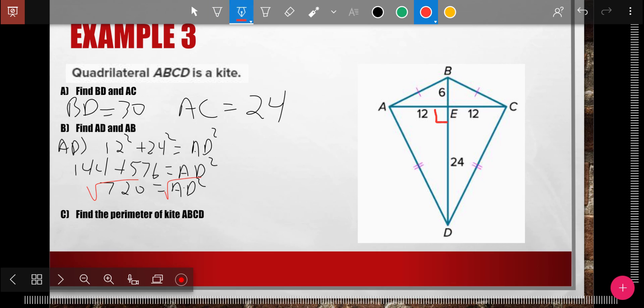And so now I take my calculator. I square root 720, I get 26.8. So this side right here is 26.8.